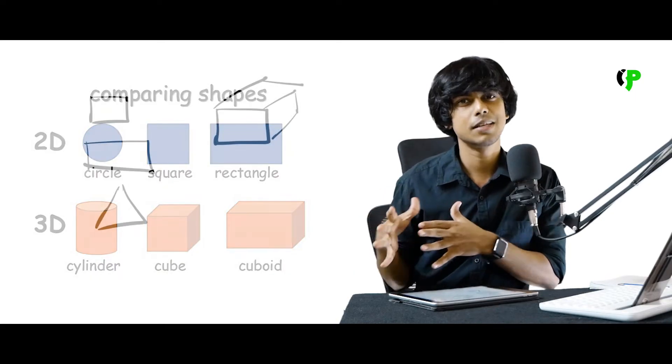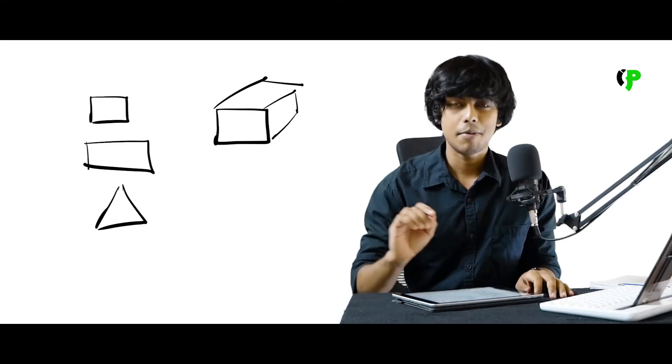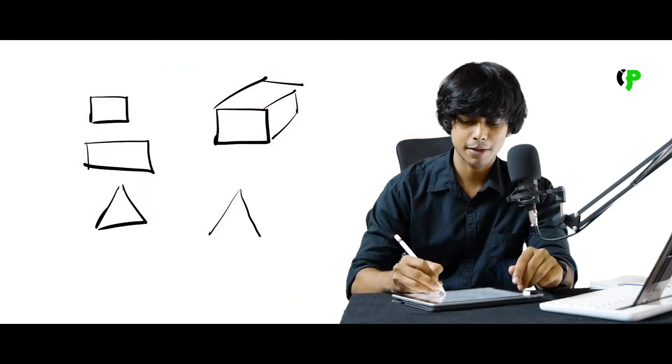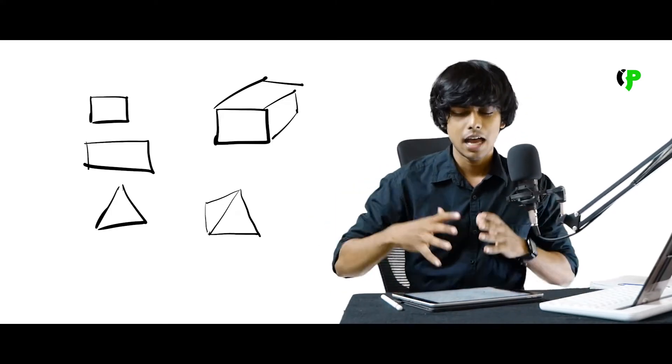Now, we get a solid pyramid. The pyramid is like the pyramids in Egypt. It has a triangle shape on the sides and a square or rectangle as the base. We will learn about a pyramid in this first session.